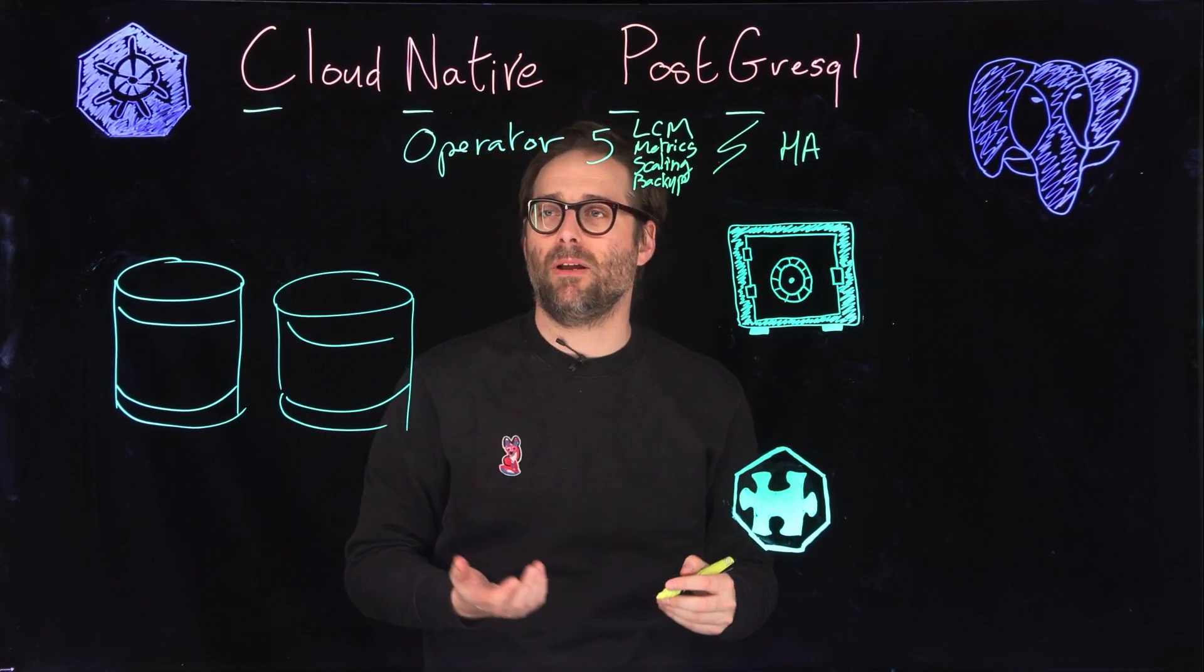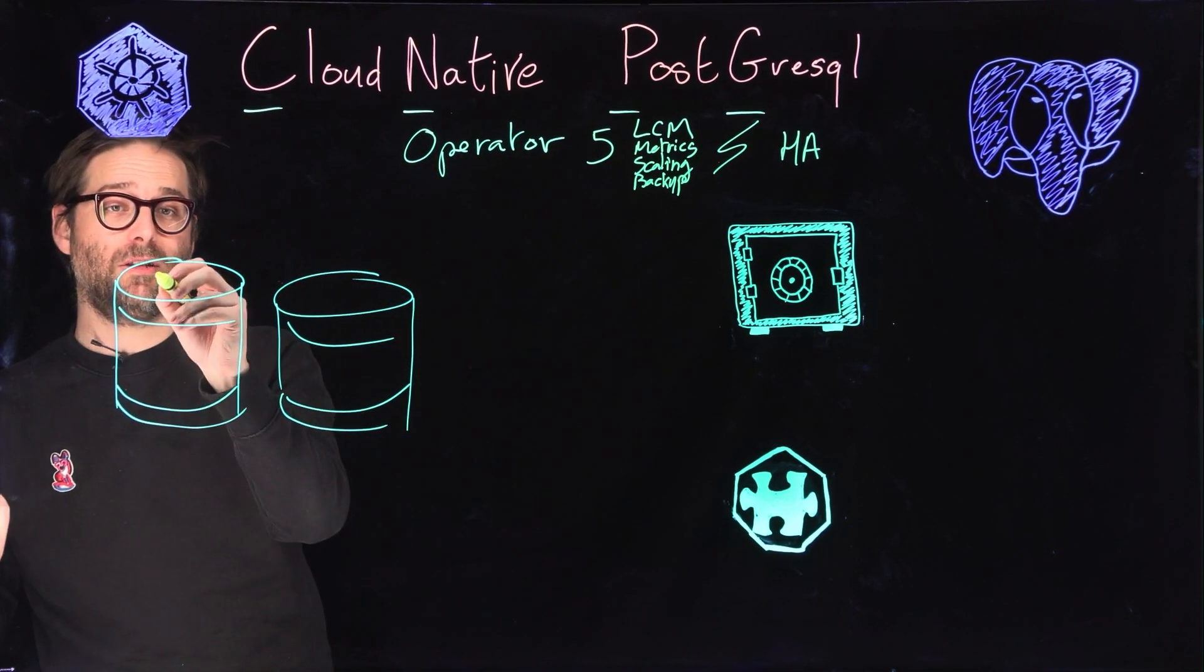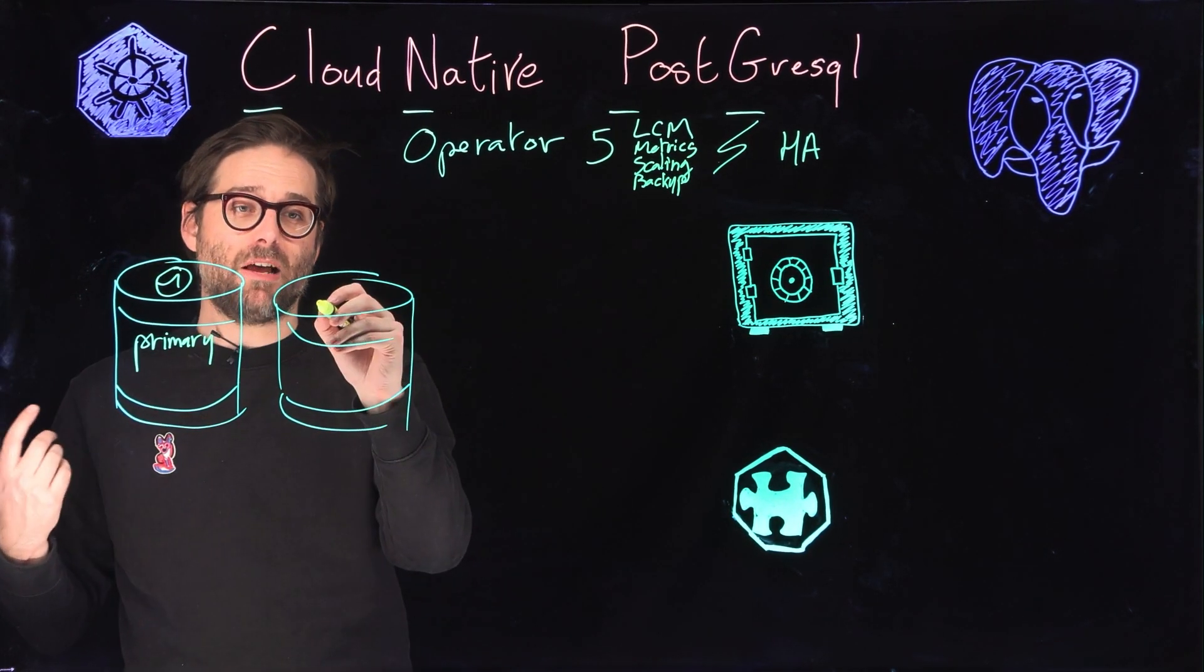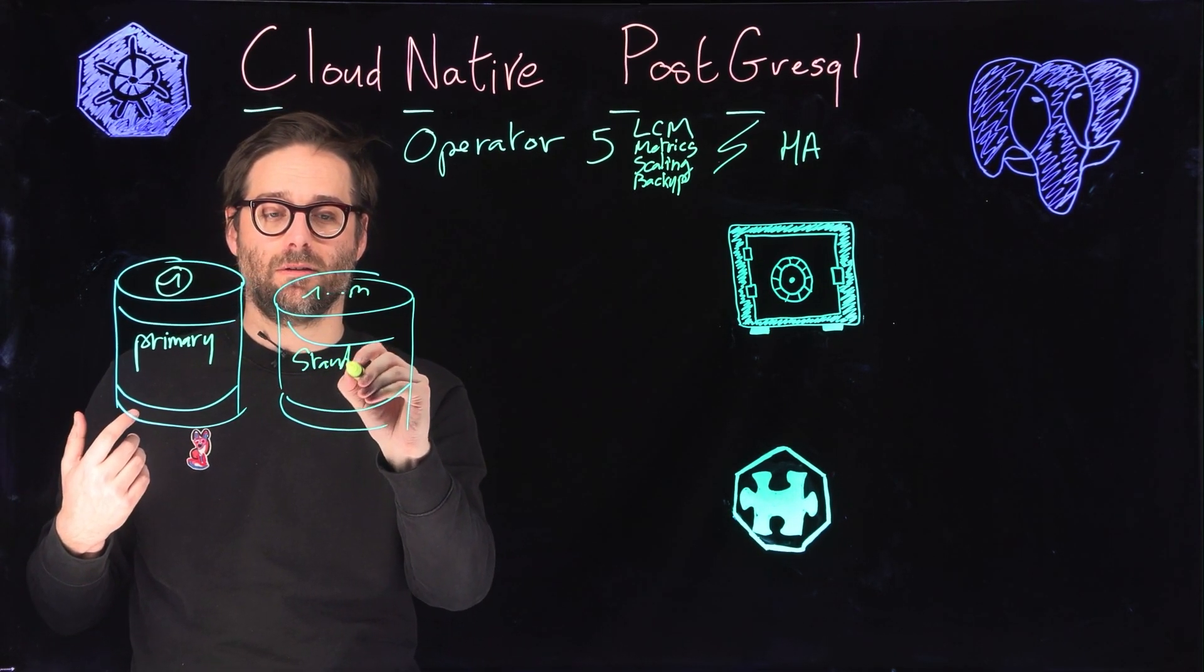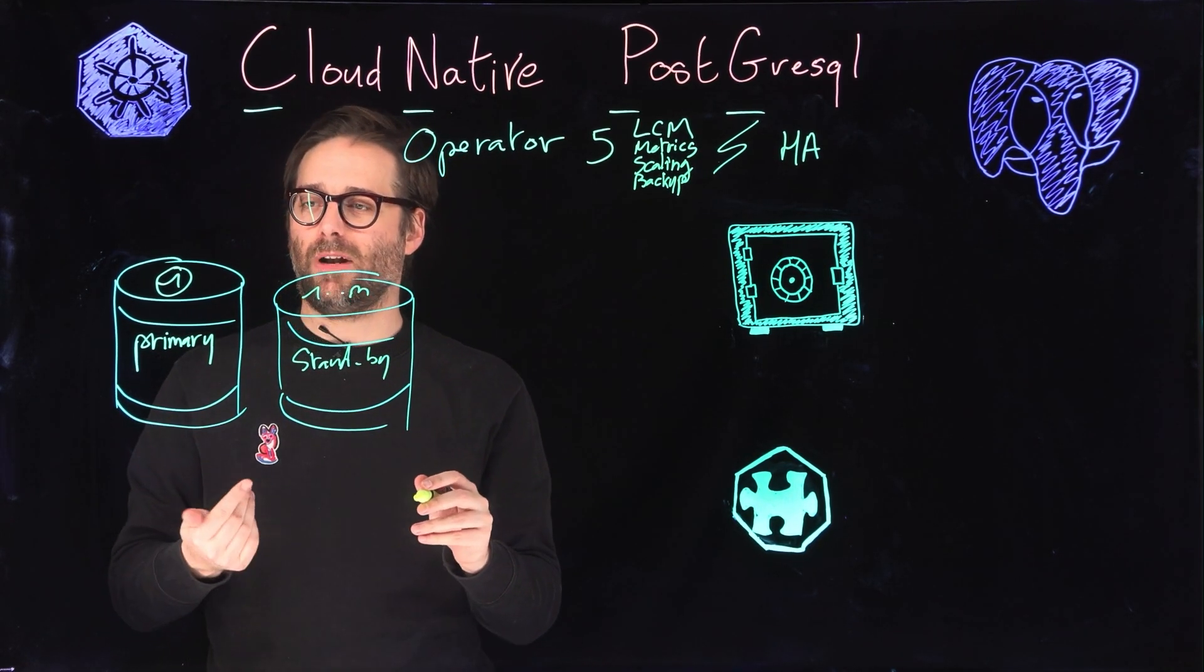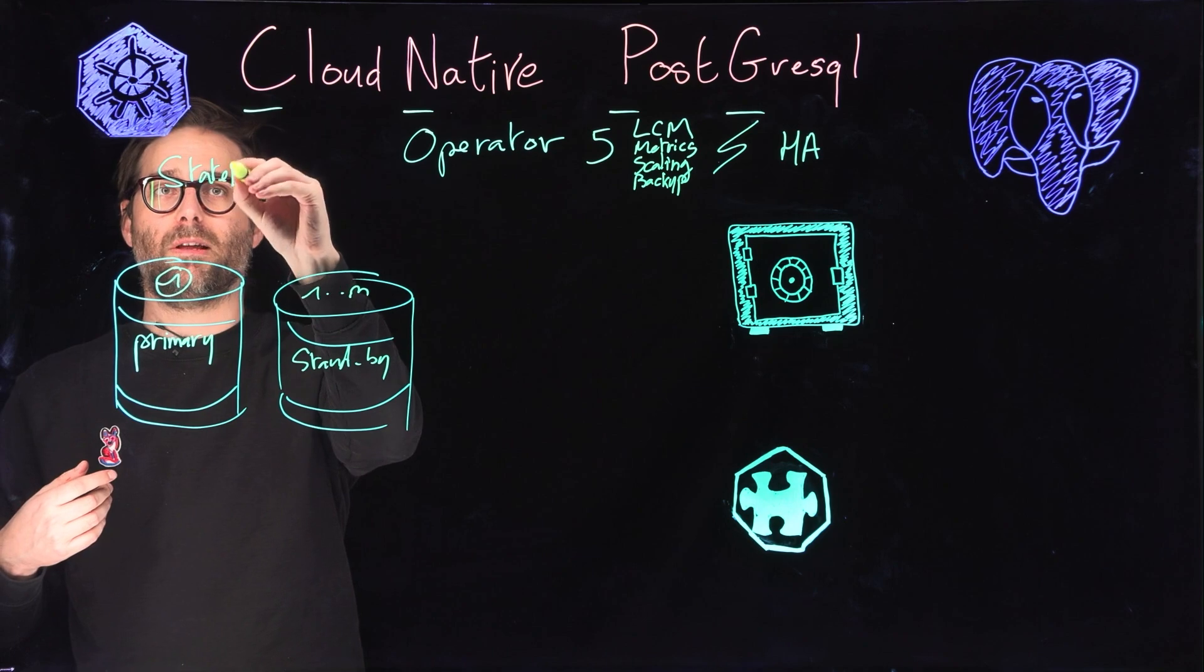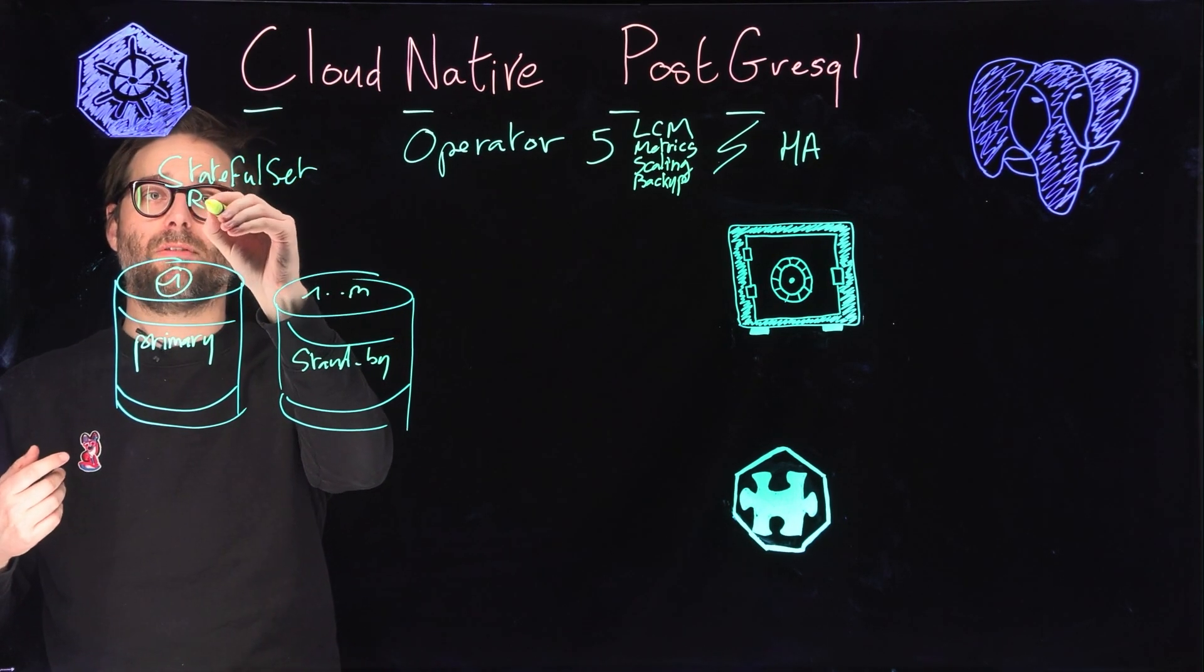When you have to implement high availability within PostgreSQL, the usual pattern is that you have an instance that is a primary that's going to get all the writes and reads and you may have one or several standby instances that gets a copy of the data on the fly. Usually when you deal with stateful apps within Kubernetes, you will use stateful sets.